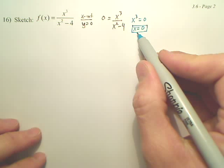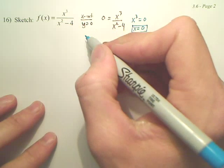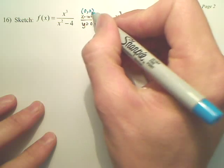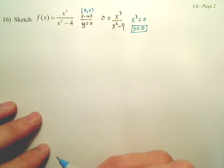So at 0 you have an x intercept. So my x intercept looks like it's going to be (0, 0). That's also my y intercept, by the way.